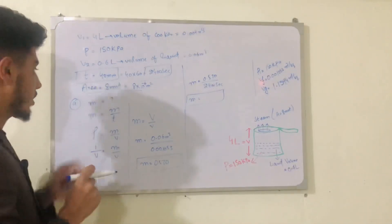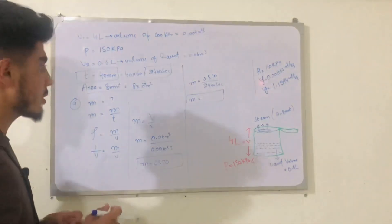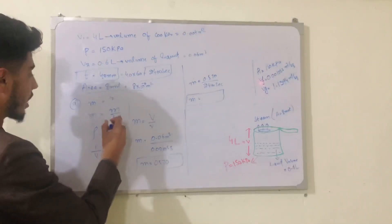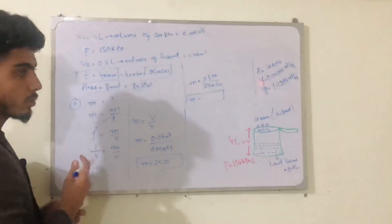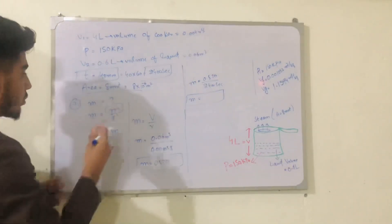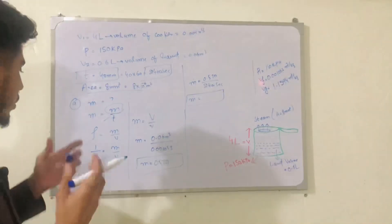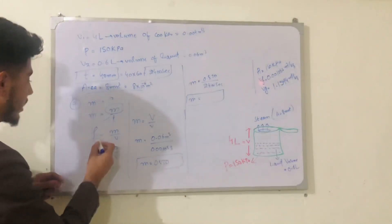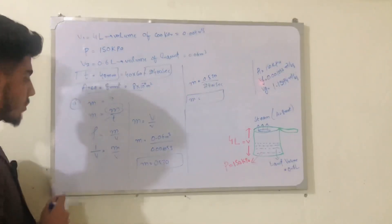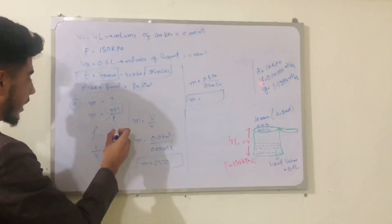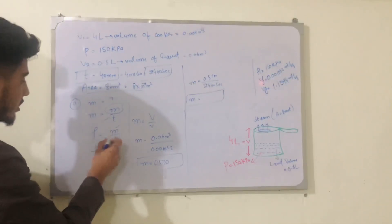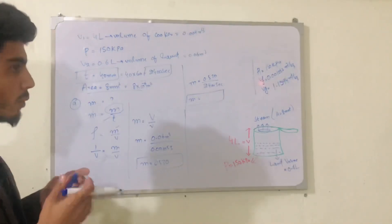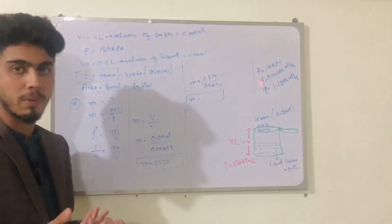The first thing to find is the mass flow rate. The formula is mass flow rate equals mass divided by time. Time is already given, but we need to find mass. Using the relation: density equals mass per unit volume, so mass equals density multiplied by volume.